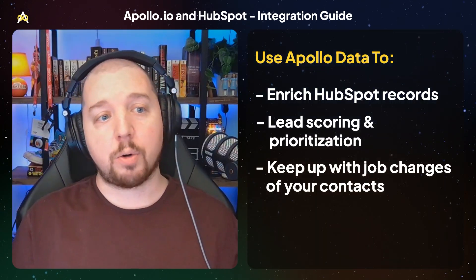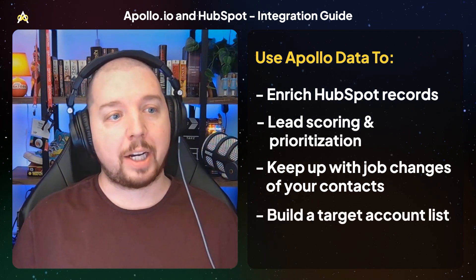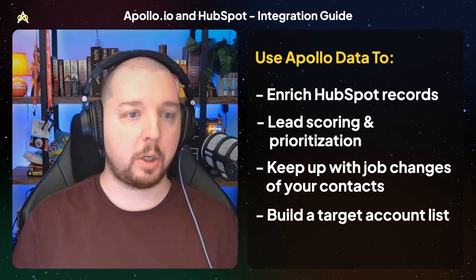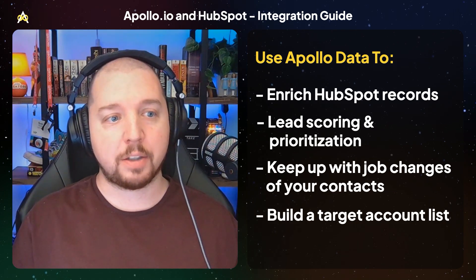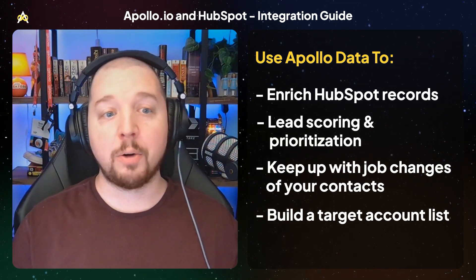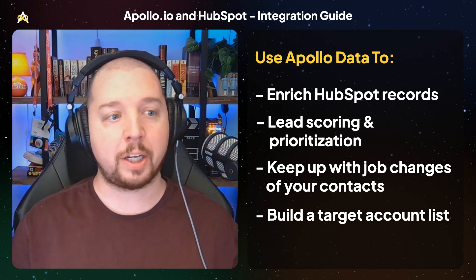Advertising is a cornerstone of any account-based strategy. Apollo can help you build a target account list using their wealth of firmographic data. Once you've built a target account list, you can use HubSpot to further segment that list and load it into the integrated advertising tools as an audience to target. Apollo and HubSpot together can enable some really powerful account-based engagement strategies. The first thing I'm going to talk about is curating a targeted advertising audience using Apollo data.